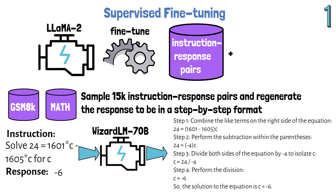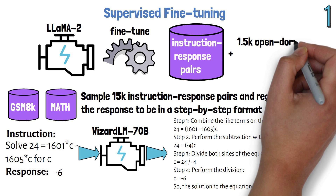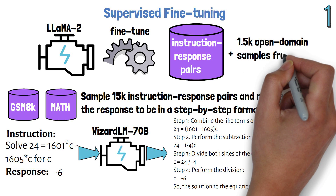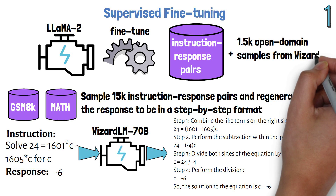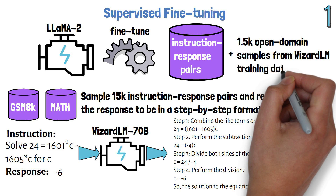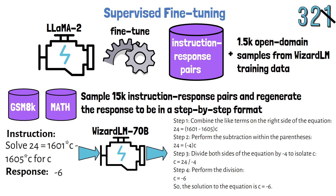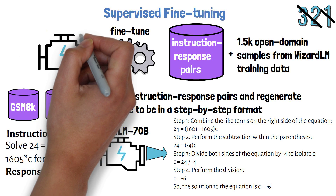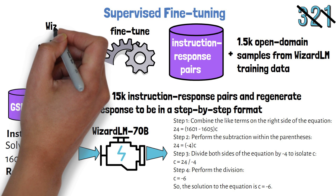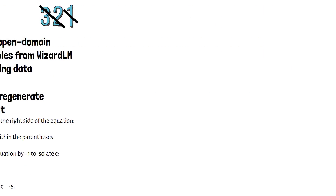In addition to the math instruction-response pairs, the fine-tuning dataset also includes 1.5K open-domain samples from WizardLM's training data. Once this step is complete, along with steps 2 and 3, the fine-tuned model will be named WizardMath — but we still have two more steps to cover.